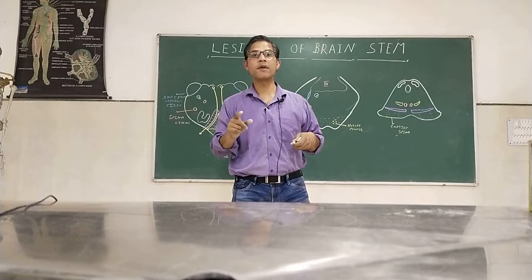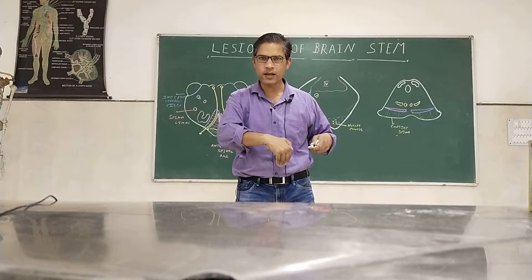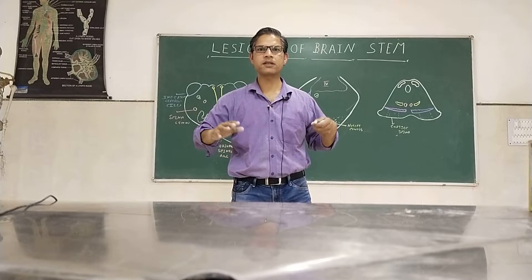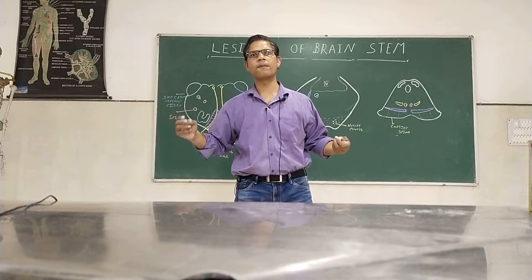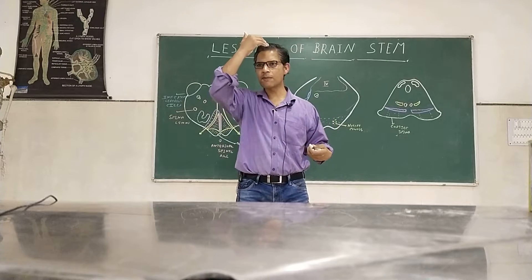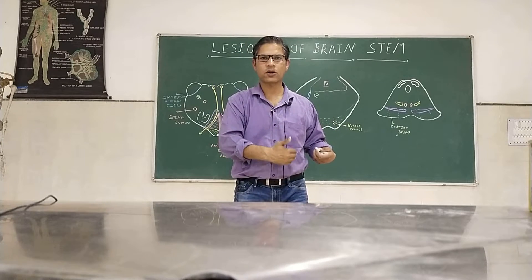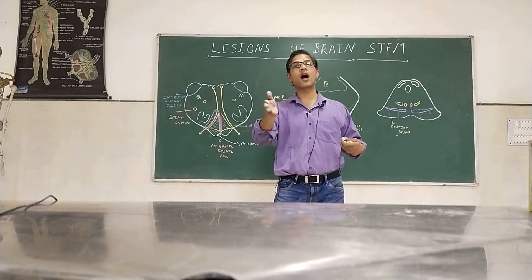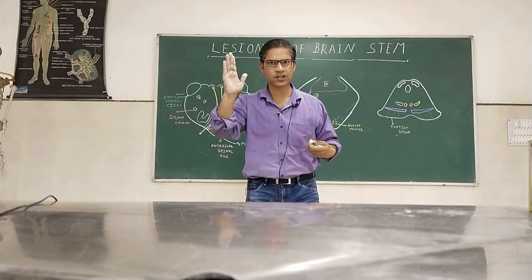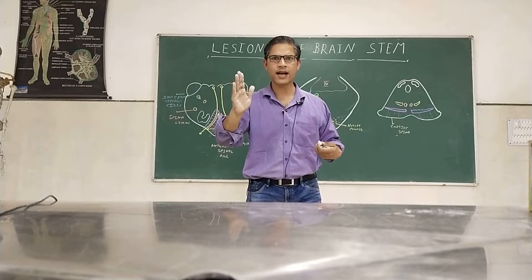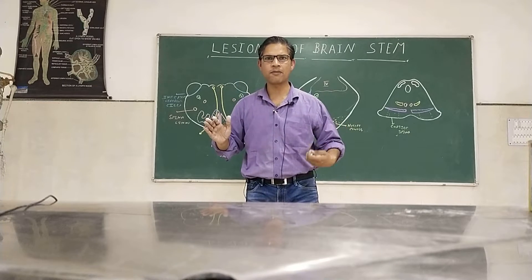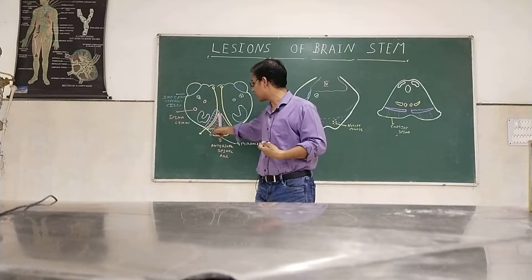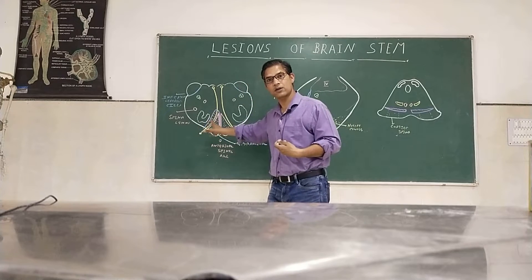Hemiplegia means one side of the upper limb and lower limb are going to be affected. Contralateral indicates the opposite of the lesion. If the lesion is on the right side of the medulla, the left upper limb and left lower limb will suffer. This is the first presentation due to damage of the pyramidal tract.